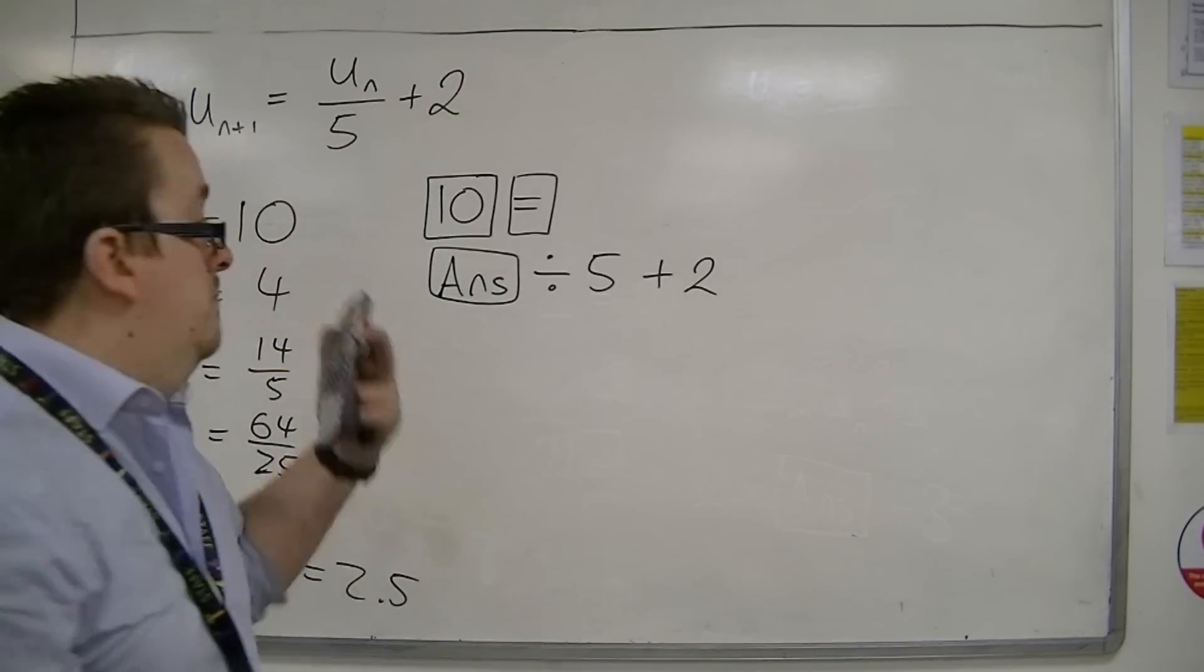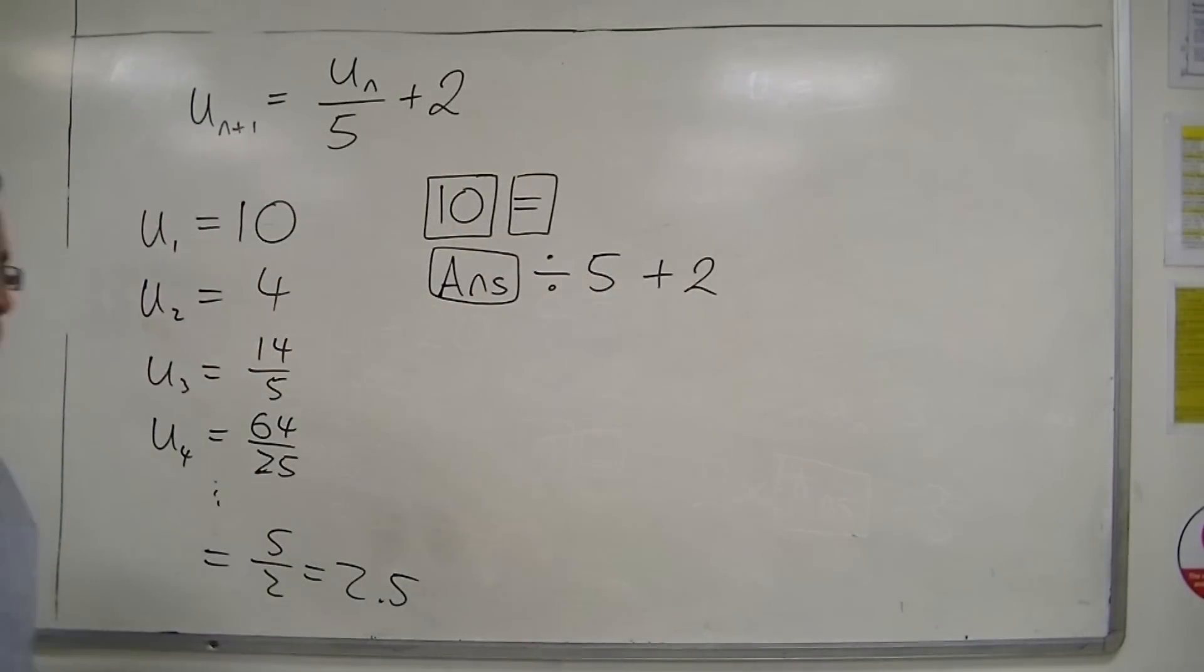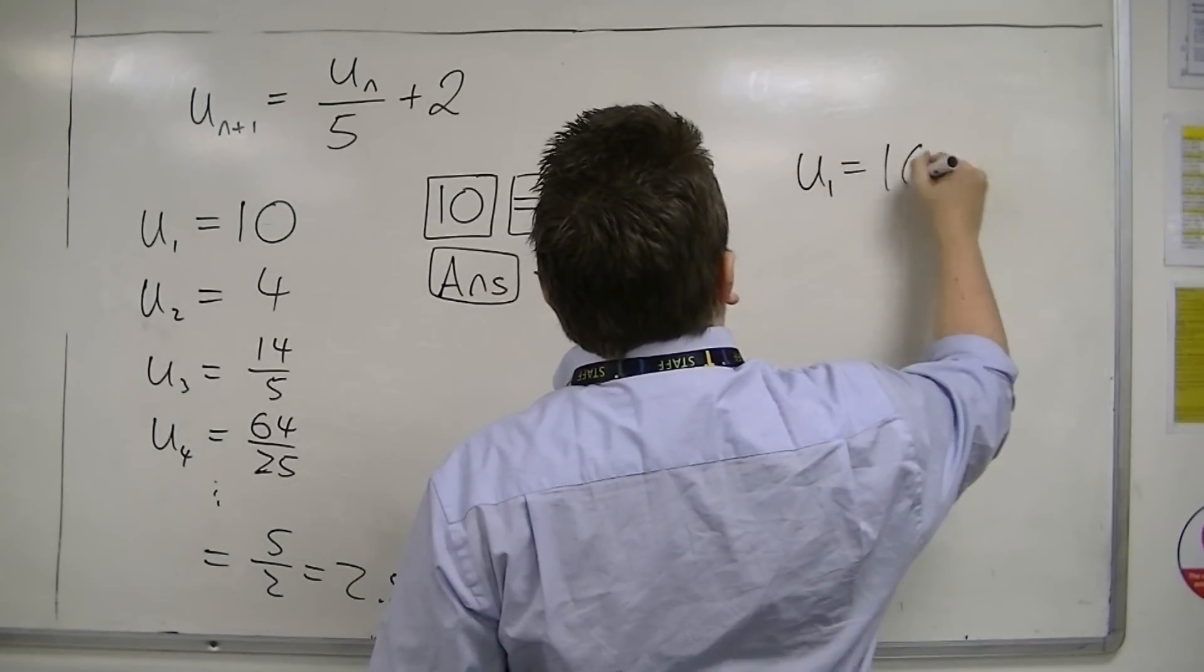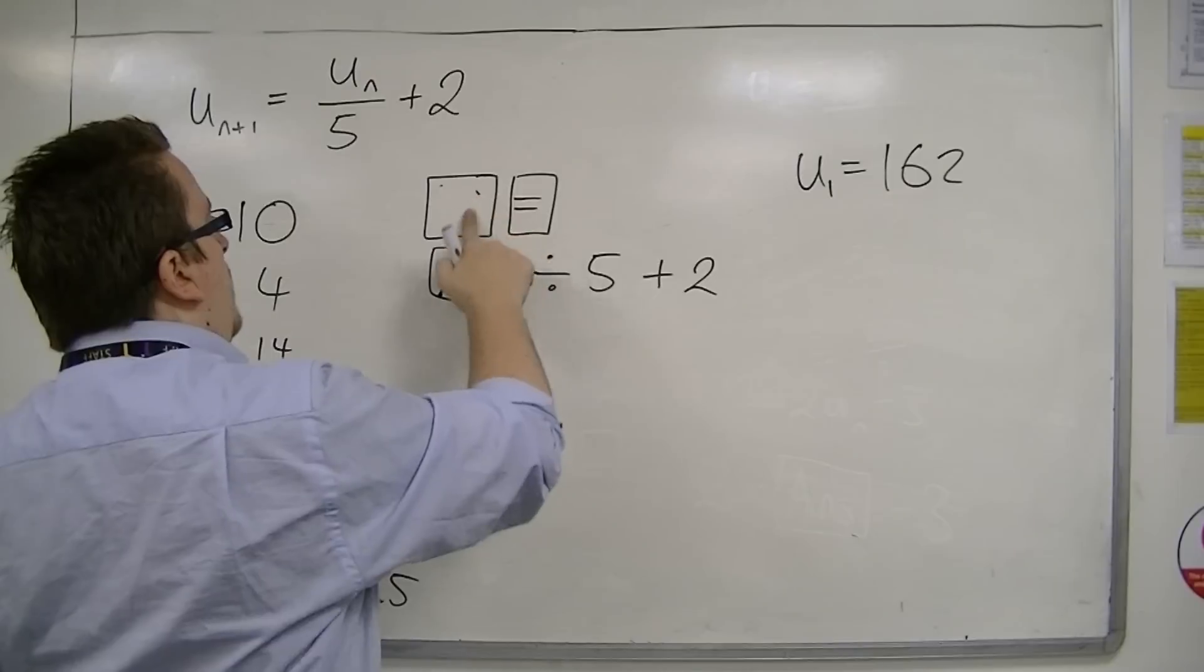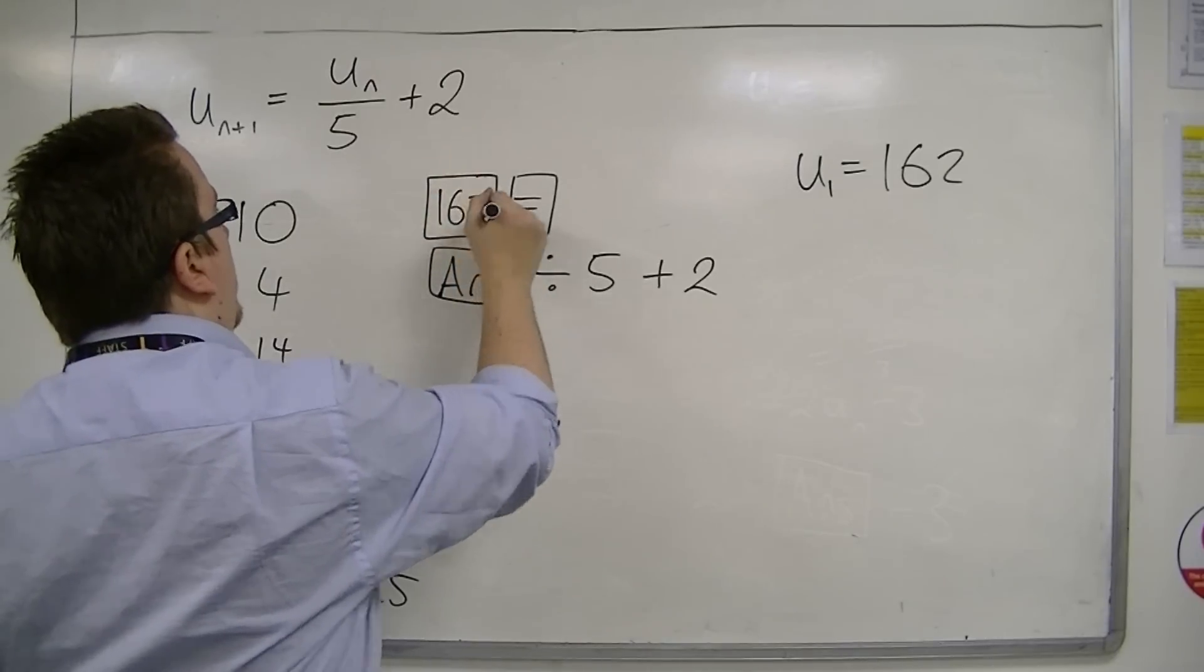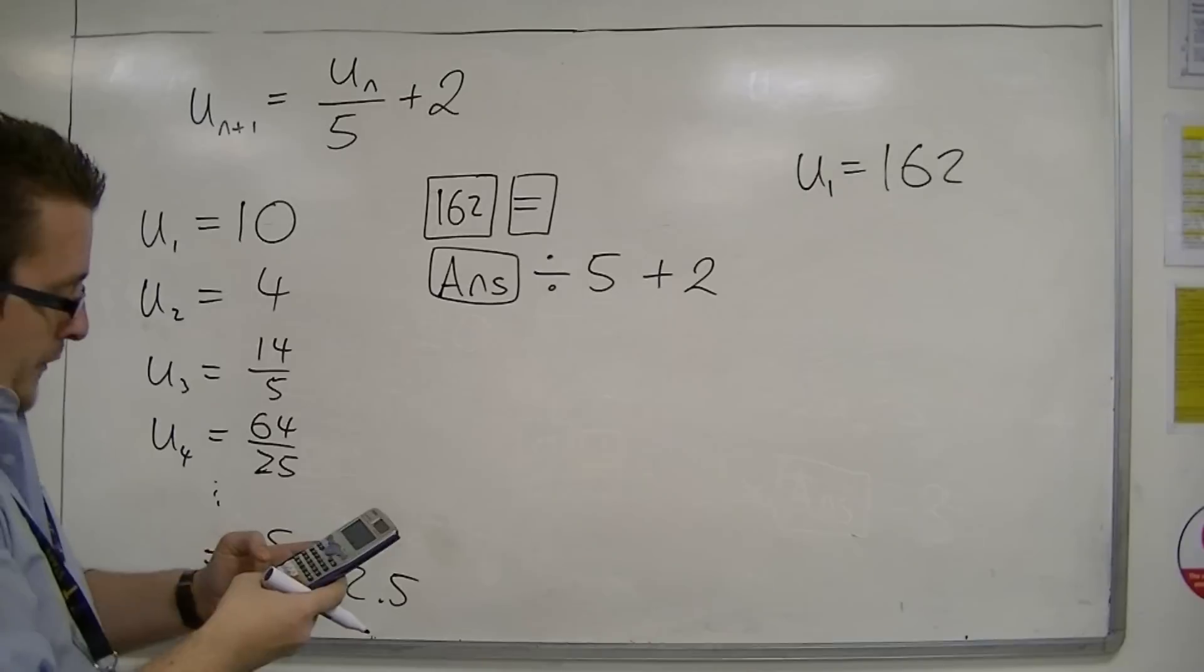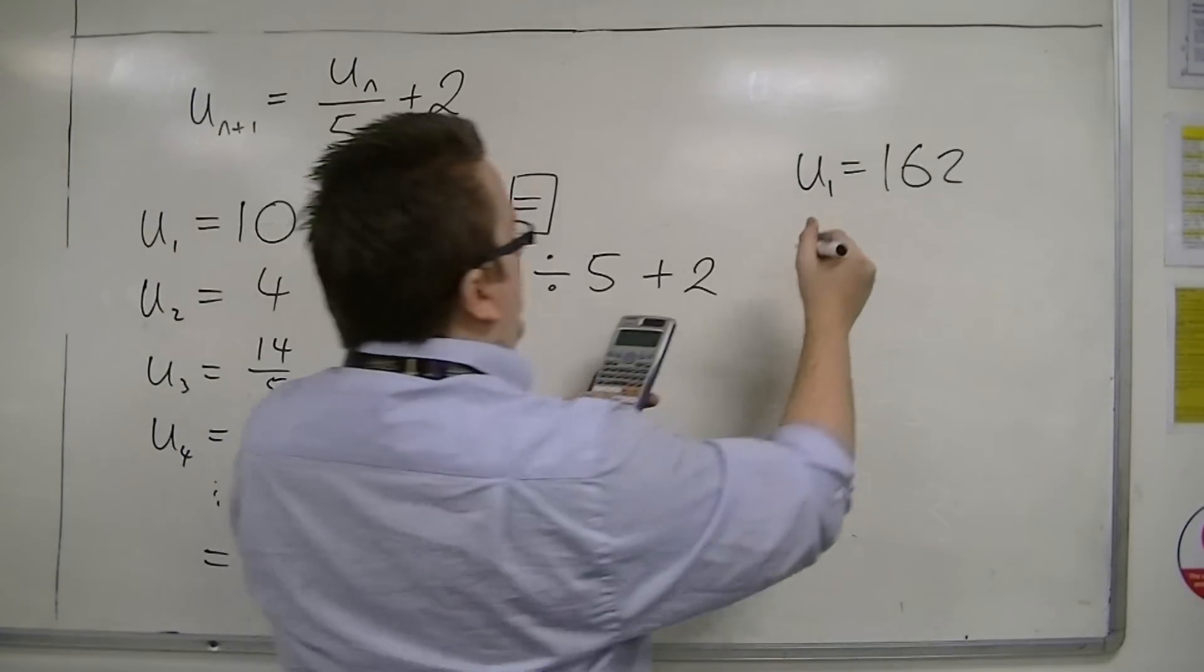Let's choose another number to start at. Let's choose 162, just off the top of my head. Let's do the same thing. Now put 162 into your calculator, press equals, and then do the answer key divided by 5 plus 2. Press equals.